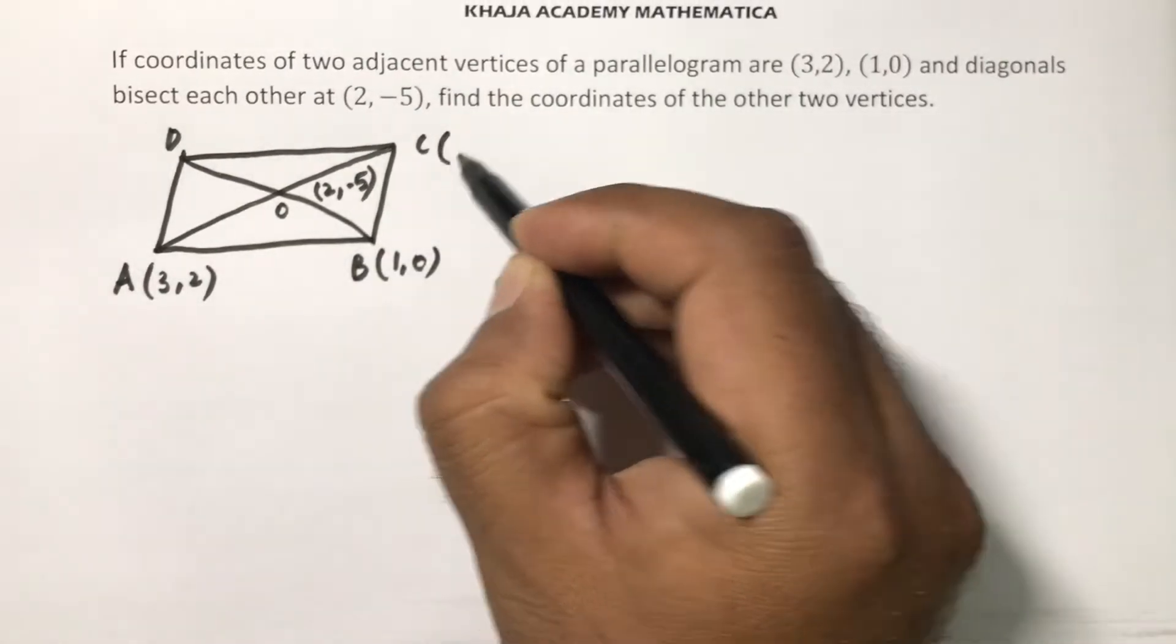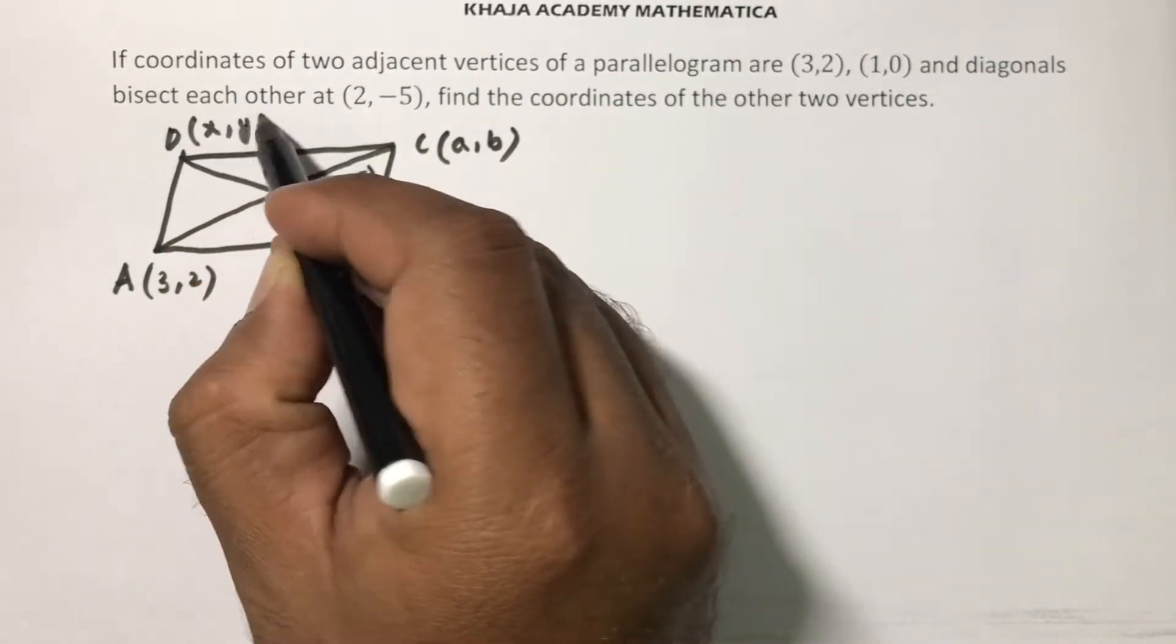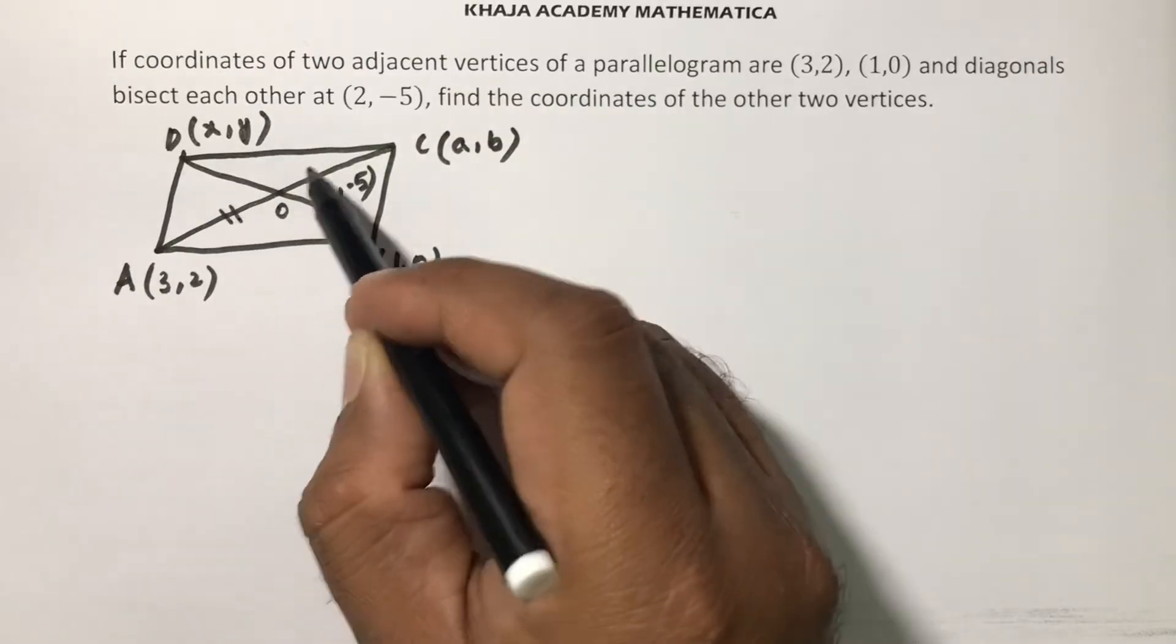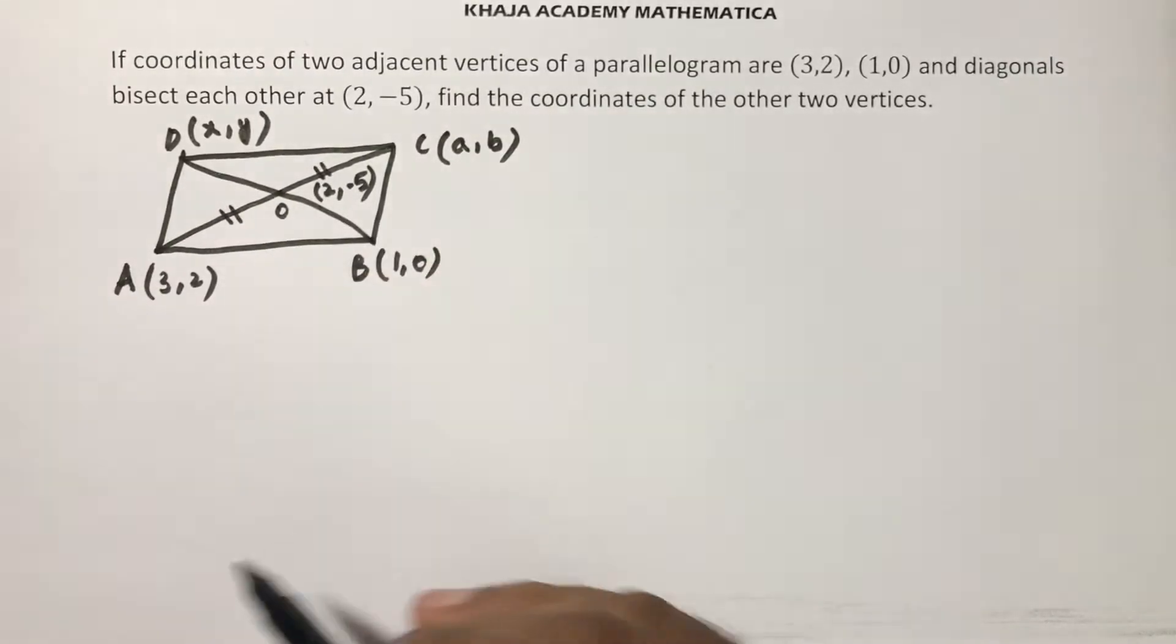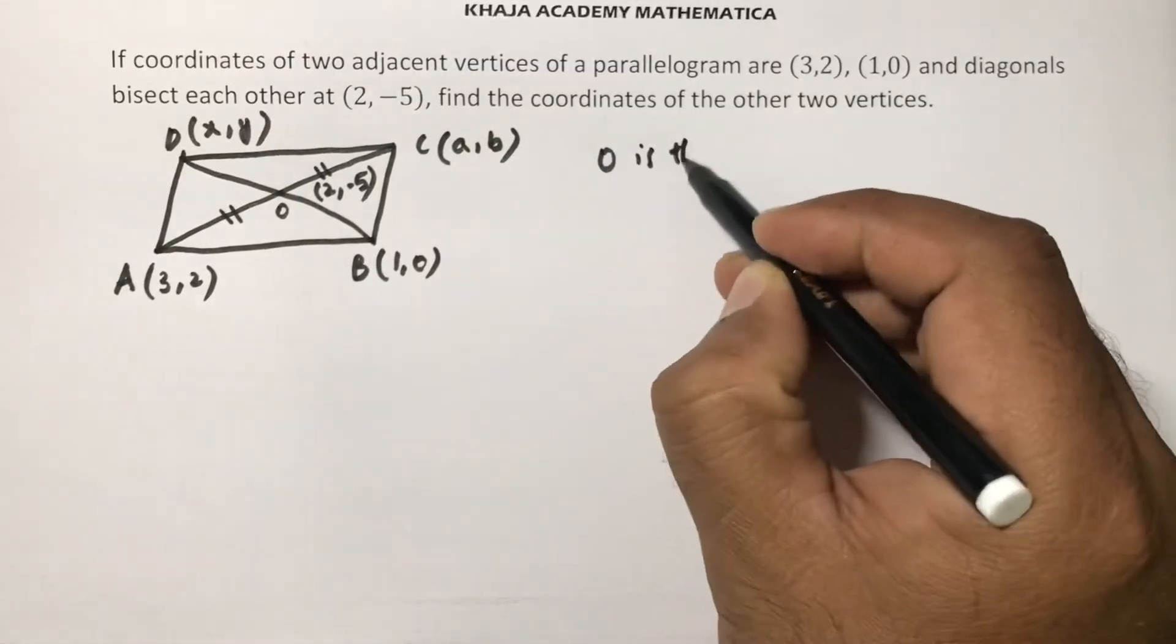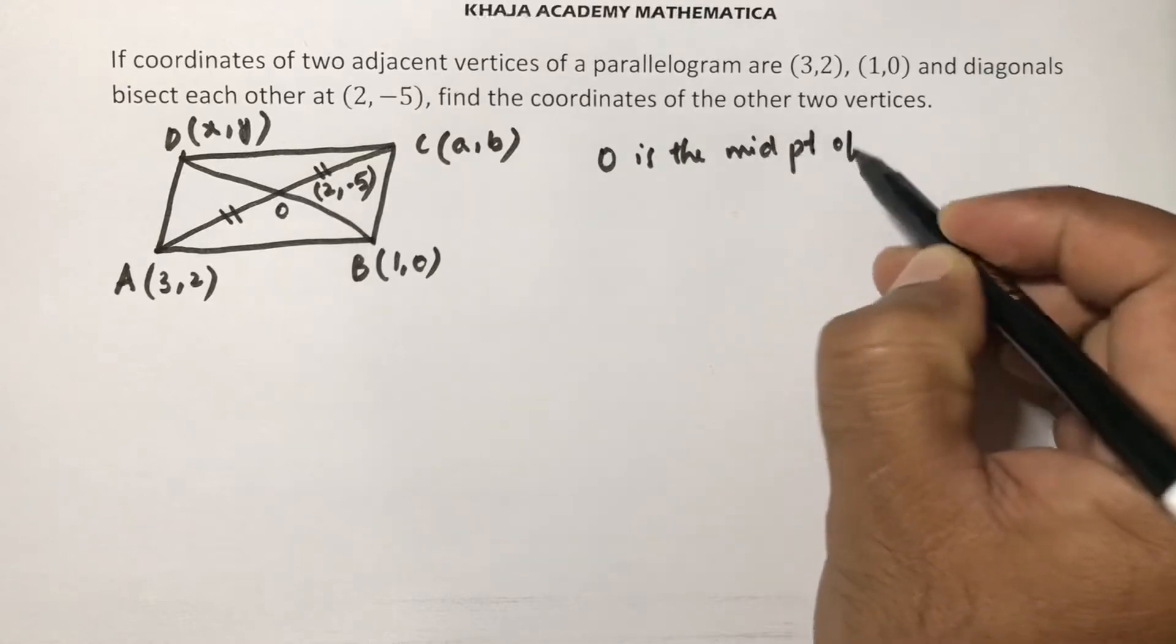So I will take C as (a,b) and D I will take as (x,y). Now see, diagonals bisect each other, so midpoint of AC is O. See, O is the midpoint of AC.